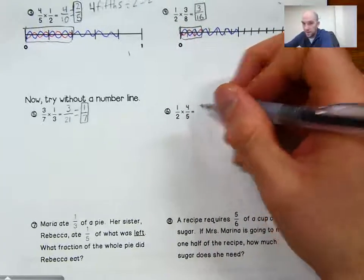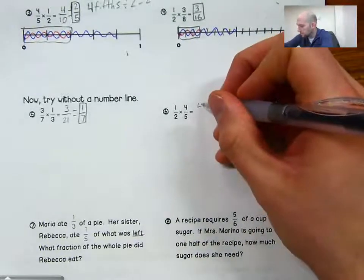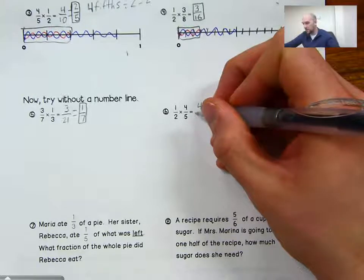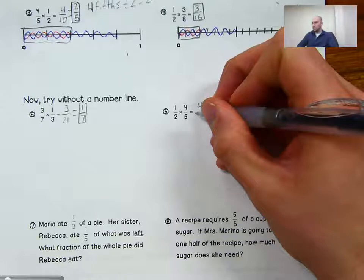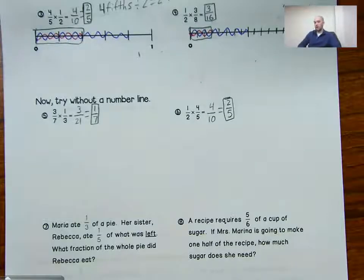Again, we multiply: one times four gives four, and two times five gives ten — four-tenths. And we saw earlier when we did four-fifths times one-half that four-tenths is equivalent to two-fifths, confirming one-half of four-fifths is two-fifths. Alright, we're going to end right there. Thank you so much for tuning in, and I look forward to seeing you next time.